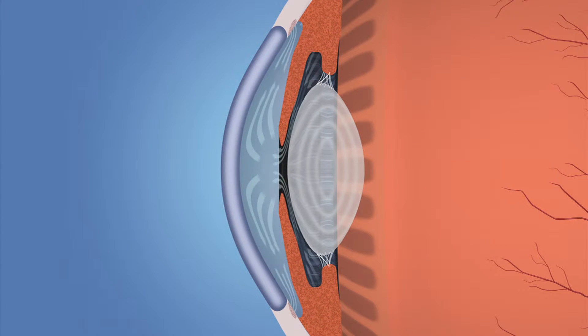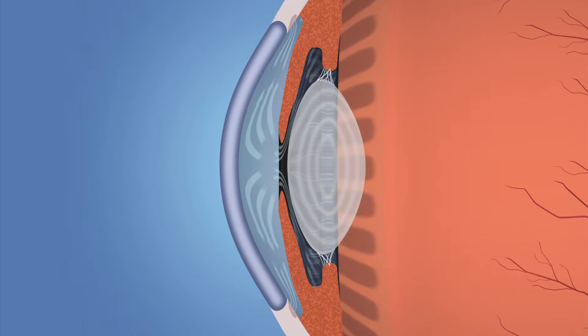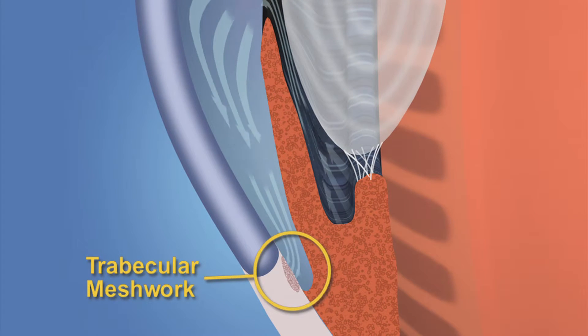To maintain a constant healthy eye pressure, your eye continually produces a small amount of aqueous humor, and an equal amount of this fluid flows out of the eye through a microscopic drain called the trabecular meshwork in the drainage angle.